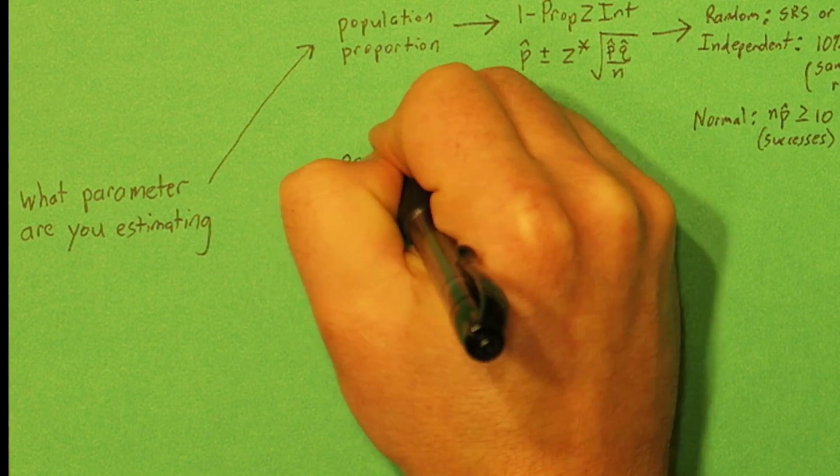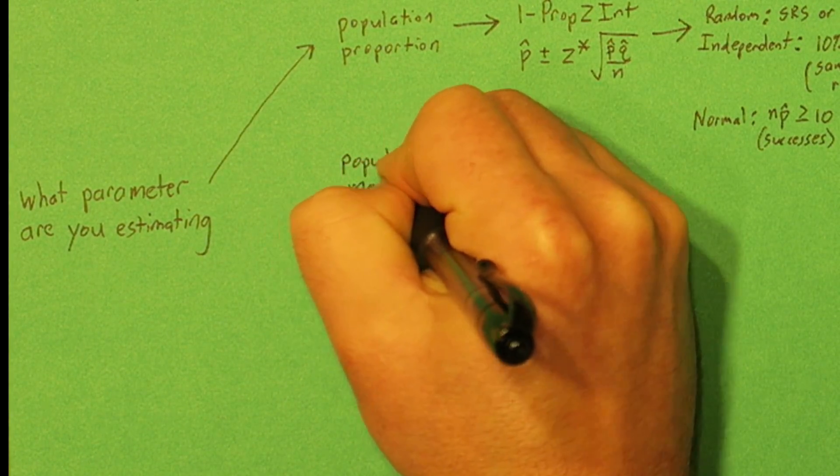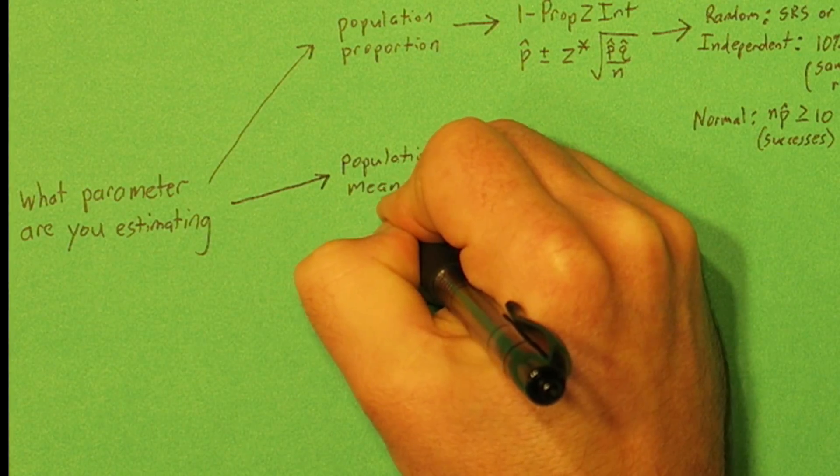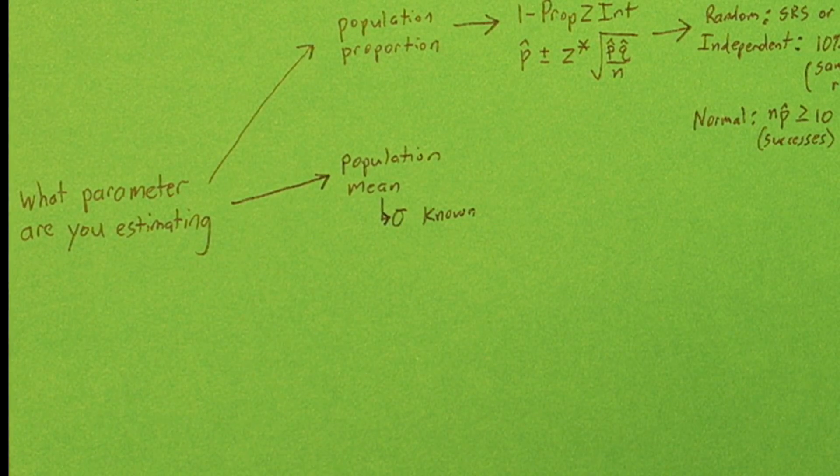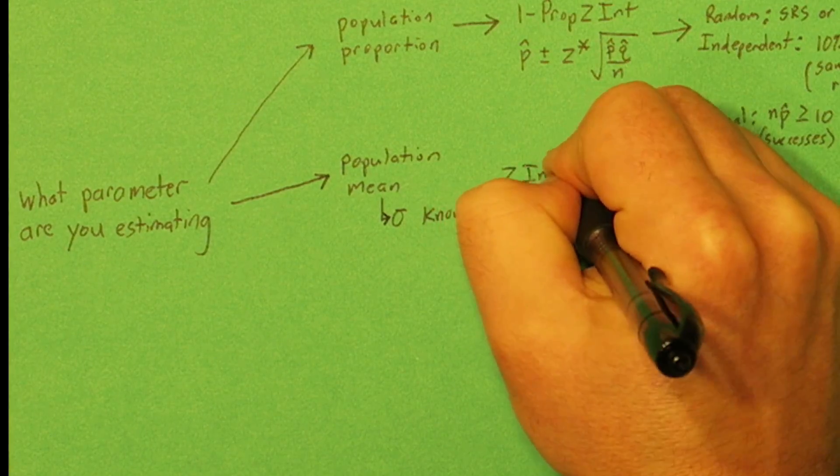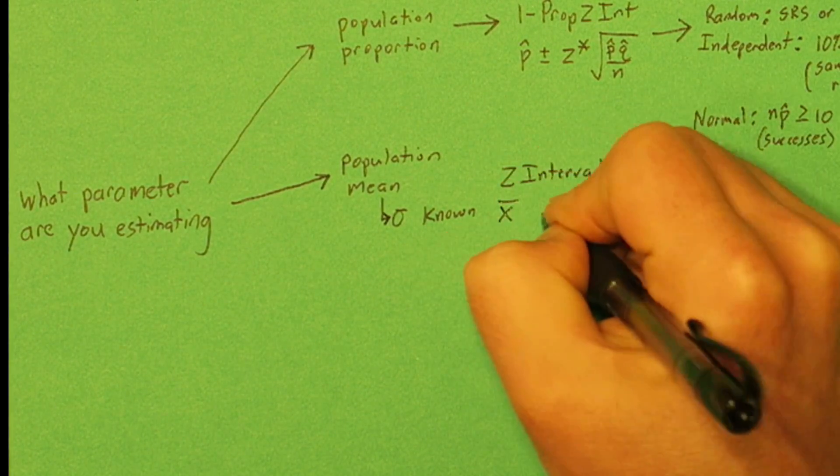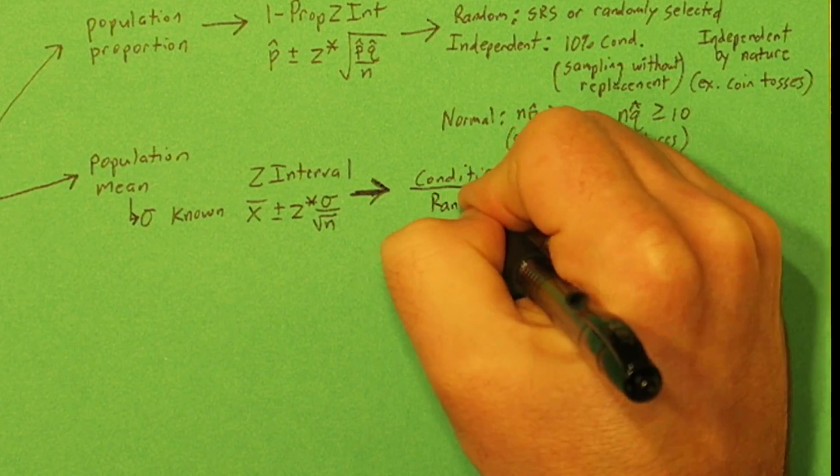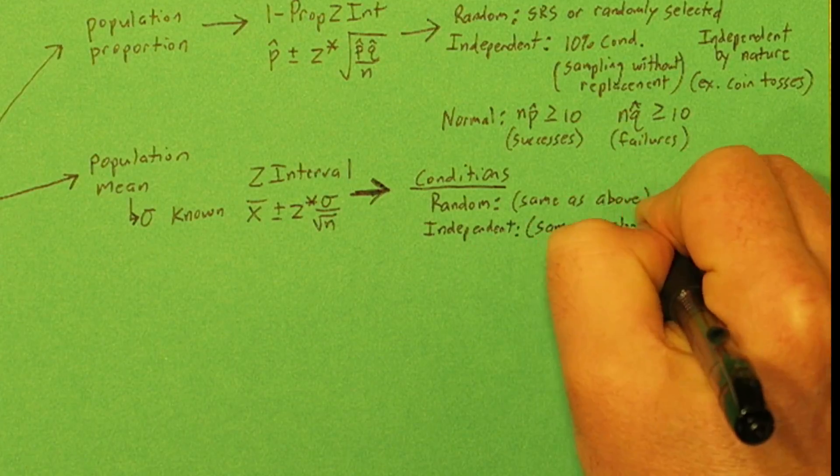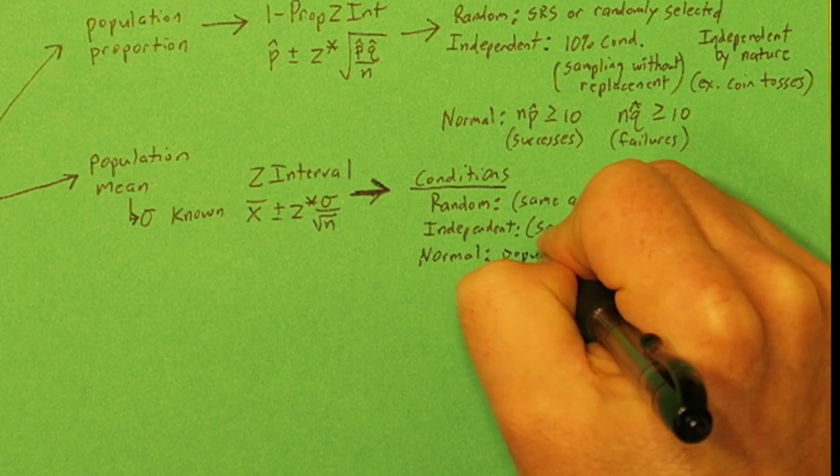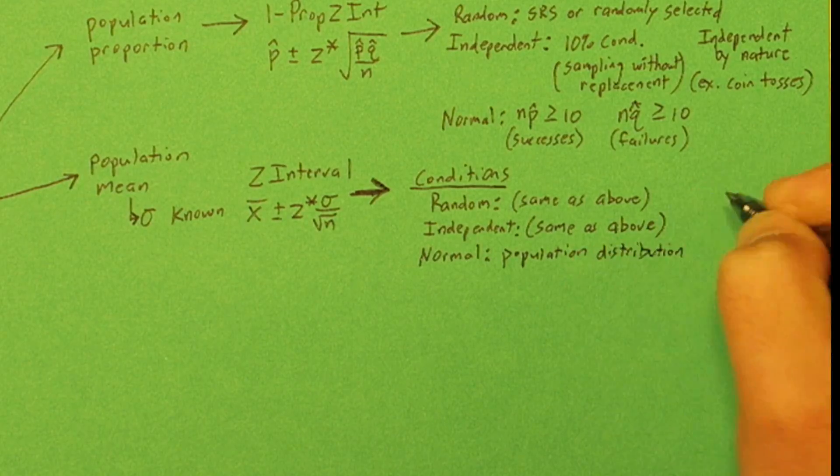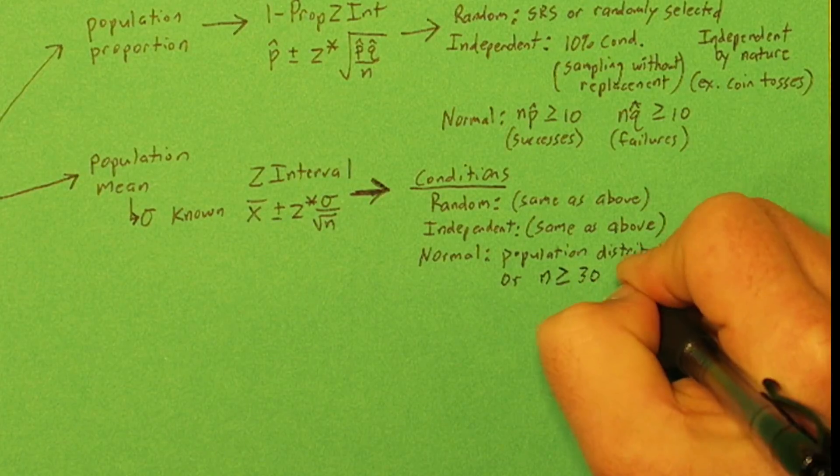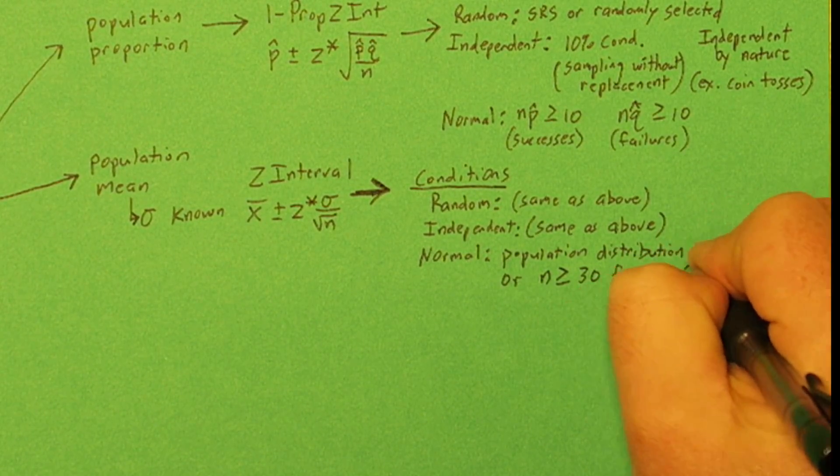If you're trying to estimate population mean, you either know sigma or not, and sigma is the population standard deviation. In reality, most of the time you wouldn't know that. But let's say you did know it. Then you could use a z interval. So that's x-bar plus or minus z star times sigma over square root of n. In this case, your conditions for random and independent would be the same. But the normal condition, you would either have to know the population distribution is normally distributed, or if your sample size is at least 30, the central limit theorem will apply and the sampling distribution will be approximately normal.